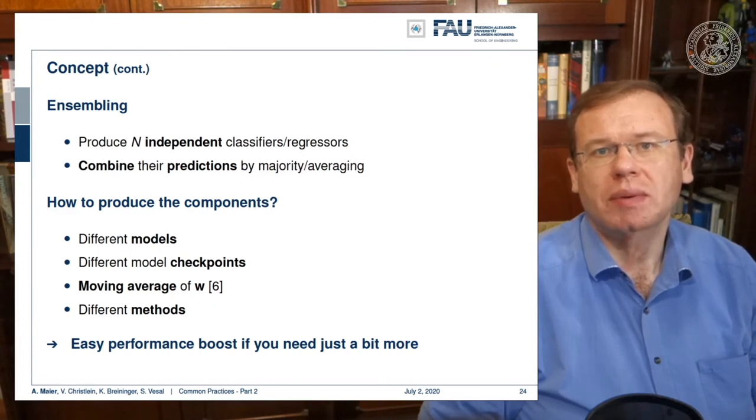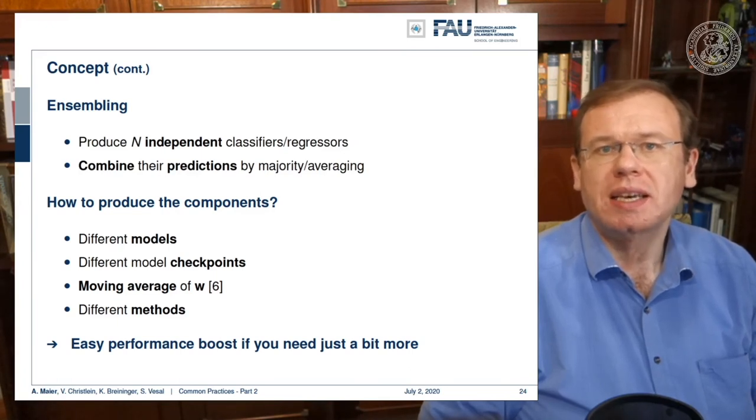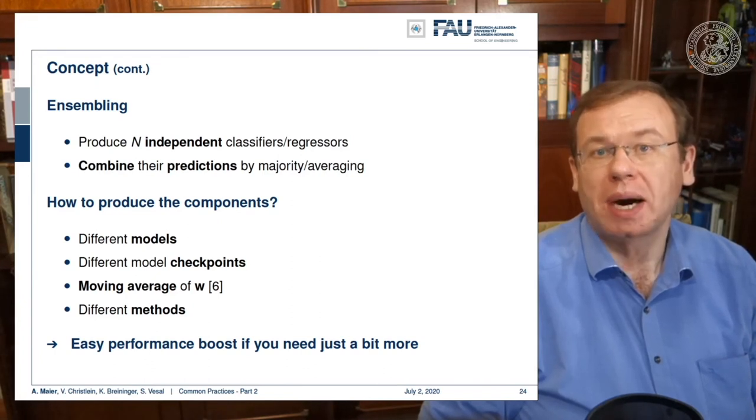Furthermore, you could also take different model checkpoints that you extract at different points in the optimization. Later, you can reuse them for ensembling. Also, a moving average of weights can generate new models. You could even go this far and combine different methods. We still have the entire catalog of traditional machine learning approaches that you could also train and then combine with your new deep learning model.